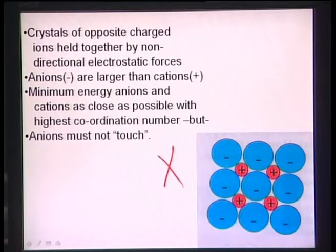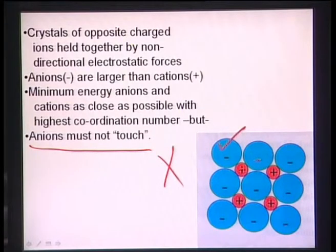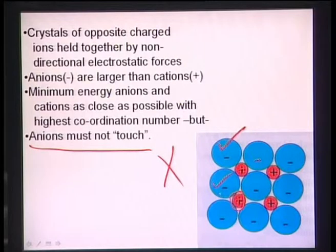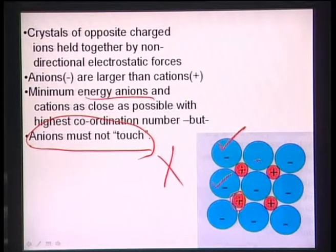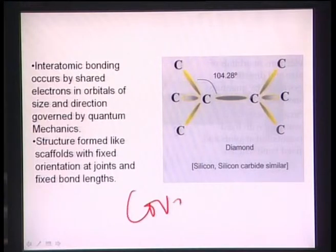The rule in ionic bonding is that anions must not touch each other. Therefore, cations occupy the interspaces between anions, separating them so they do not touch. At minimum energy, anions and cations are as close as possible so the highest coordination number is possible. Typically, anions are larger than cations.